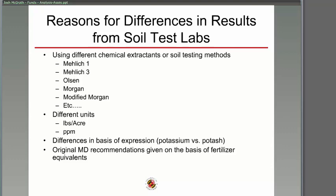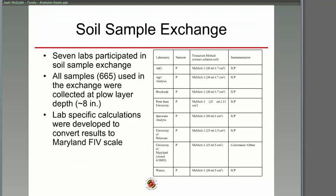There are several reasons soil tests can vary. Different extractions — Mehlich-1, Mehlich-3, Olsen, Morgan, Modified Morgan — don't convert well to University of Maryland recommendations. Labs can also use different units: pounds per acre, milligrams per kilogram, or PPM. They can differ in basis of expression — potassium versus potash. Original Maryland recommendations are given on the basis of fertilizer equivalents: pounds of P₂O₅ and pounds of potash.